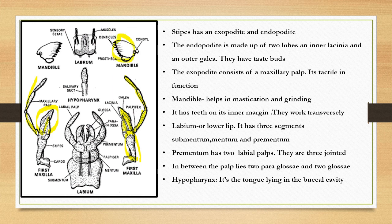The mandible has many cutting edges, so it helps in mastication and grinding. Now the labium — this is the labium, the lower lip. It has three segments: this portion is called the mentum.